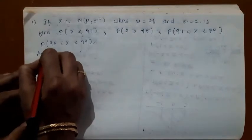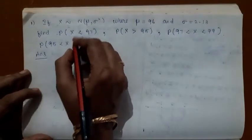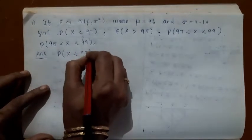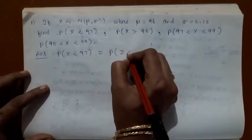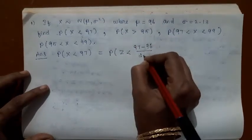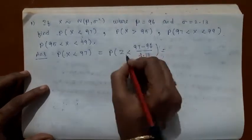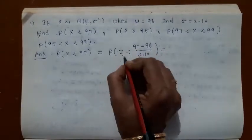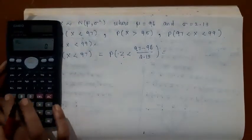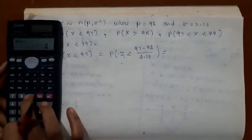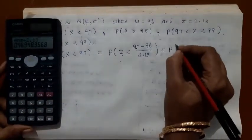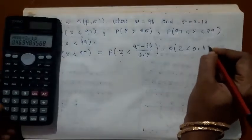The question is in terms of X, but you should convert it in terms of Z. Probability of X less than 97 equals probability of Z less than (97 minus mu) divided by sigma. You change it on both sides: X minus mu over sigma becomes Z. Calculate this value: 97 minus 96 is 1, divided by 2.13. It is probability of Z less than 0.47.